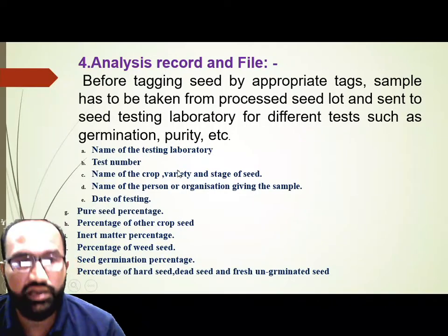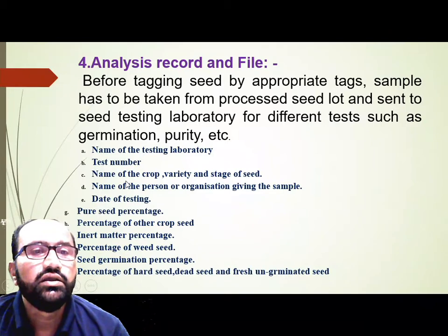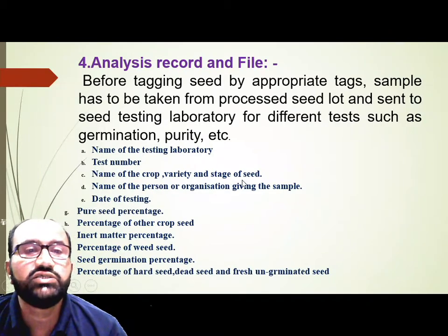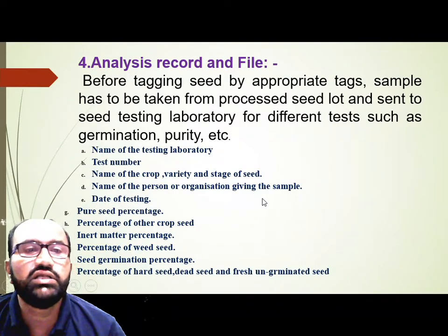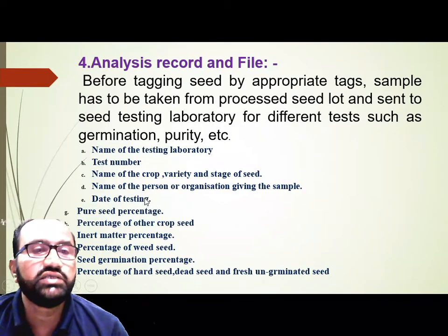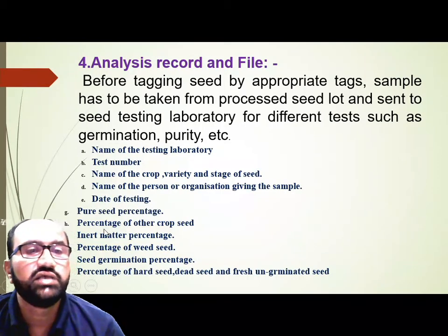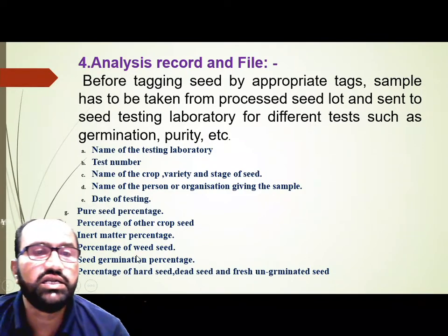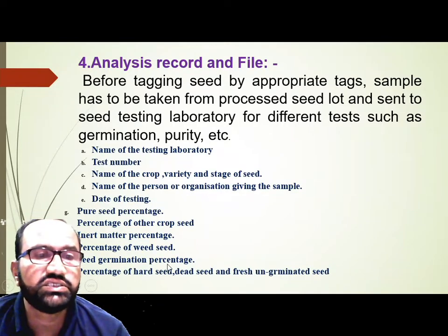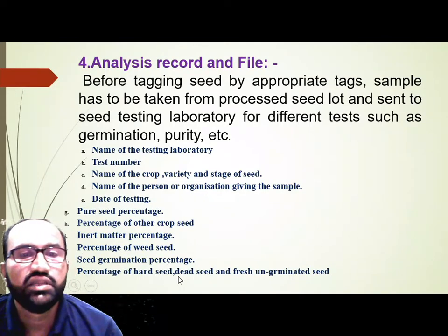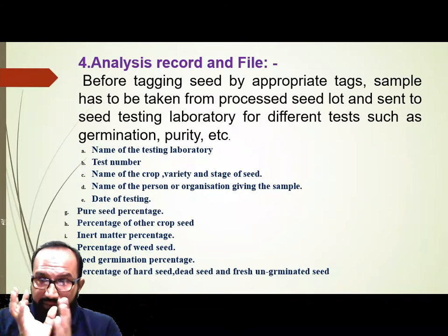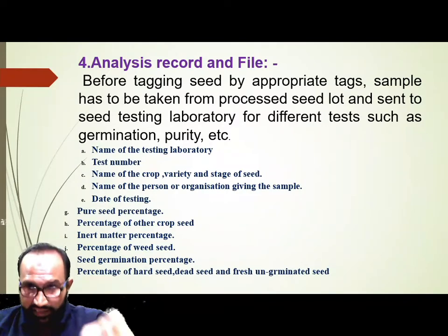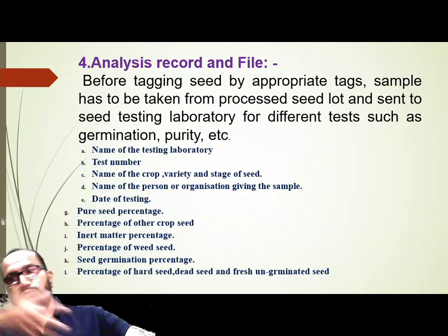The seed testing laboratory report includes: name of the testing laboratory, test number, name of crop, variety and stage of seed, name of the person or organization giving the sample, date of test, and testing results. Results include: pure seed percentage, percentage of other crop seed, inert material percentage, percentage of weed seed, seed germination percentage, percentage of hard seed, dead seed, and fresh un-germinated seed.